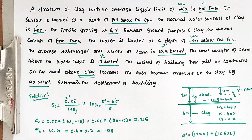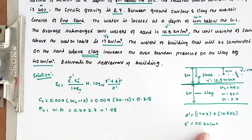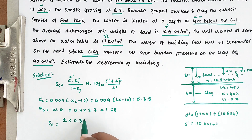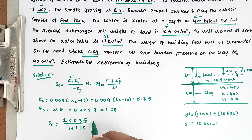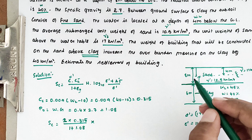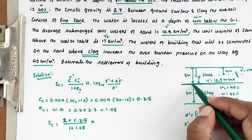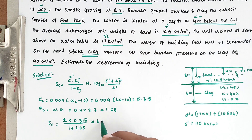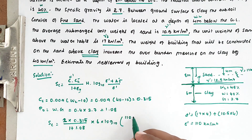Now we know all the details, so we can substitute all the values in the formula. SC = 1 × 0.315 / (1 + 1.08) × 6 × log₁₀[(110 + 40) / 110]. That is sigma-dash is 110, plus 40 divided by 110.